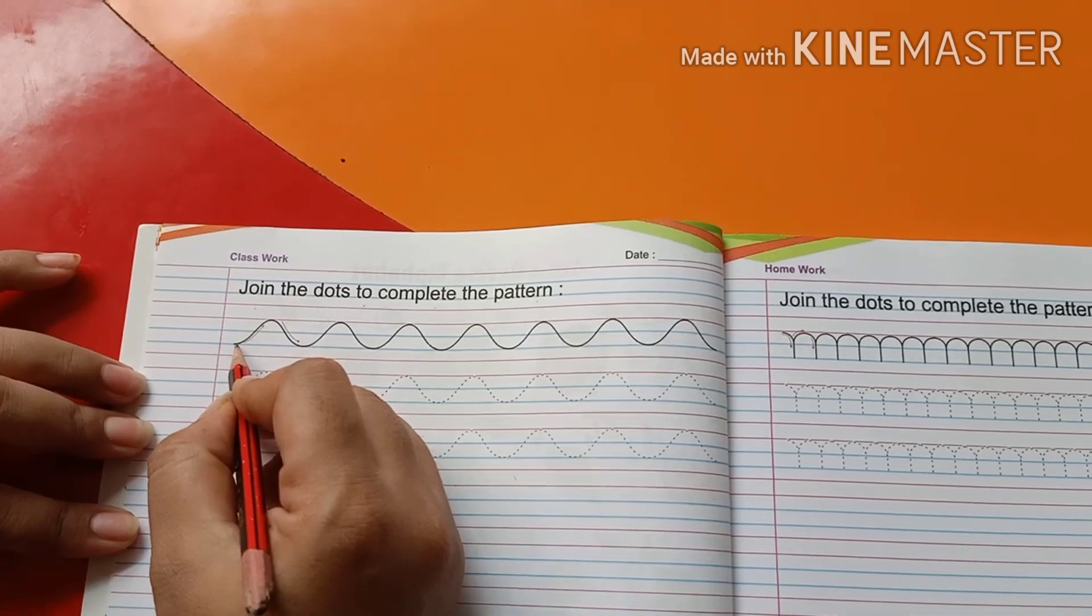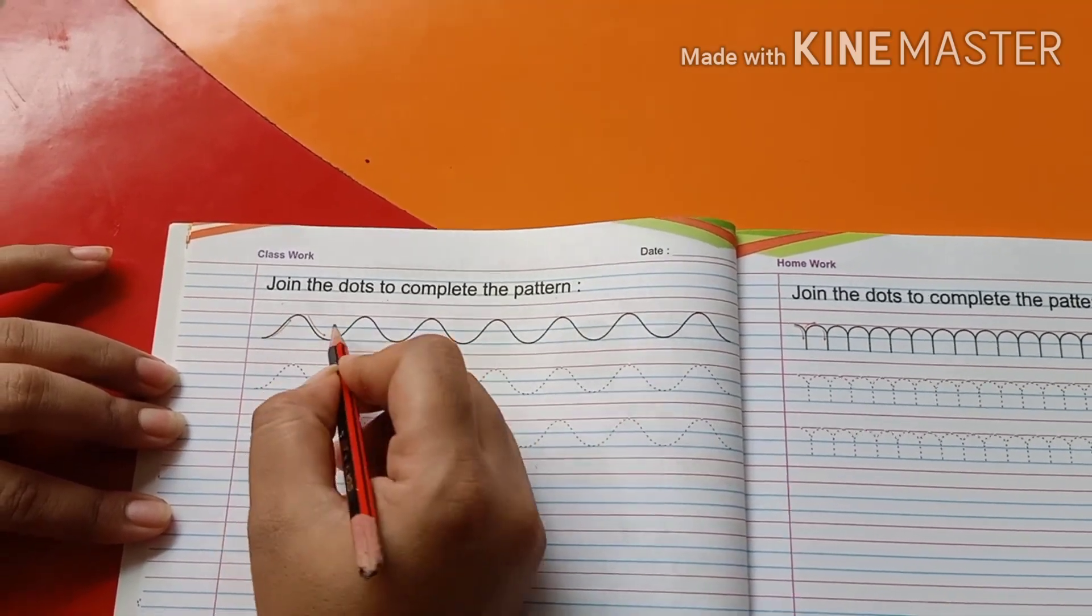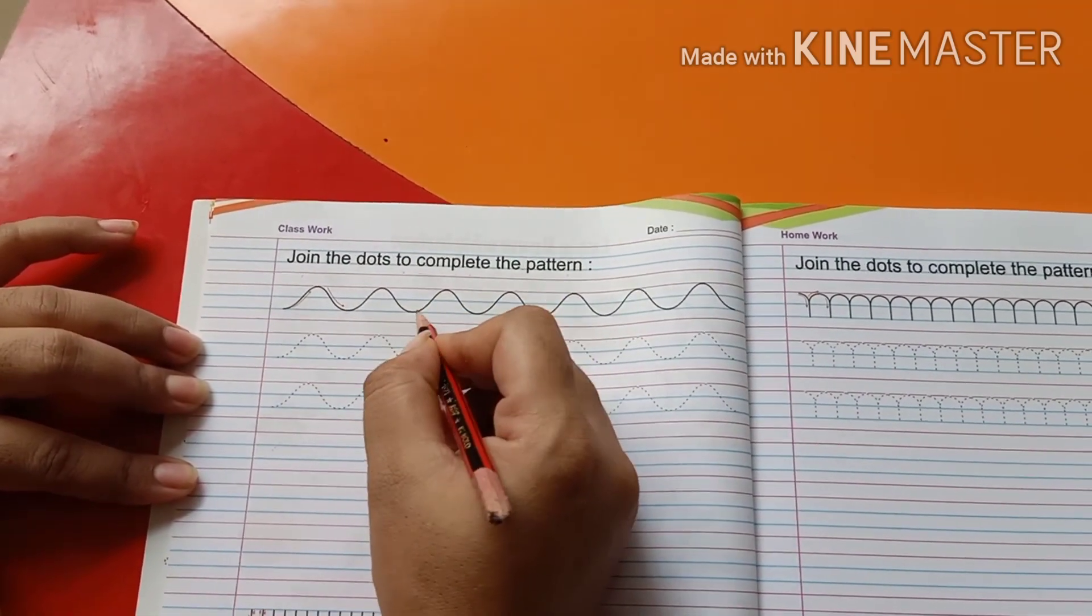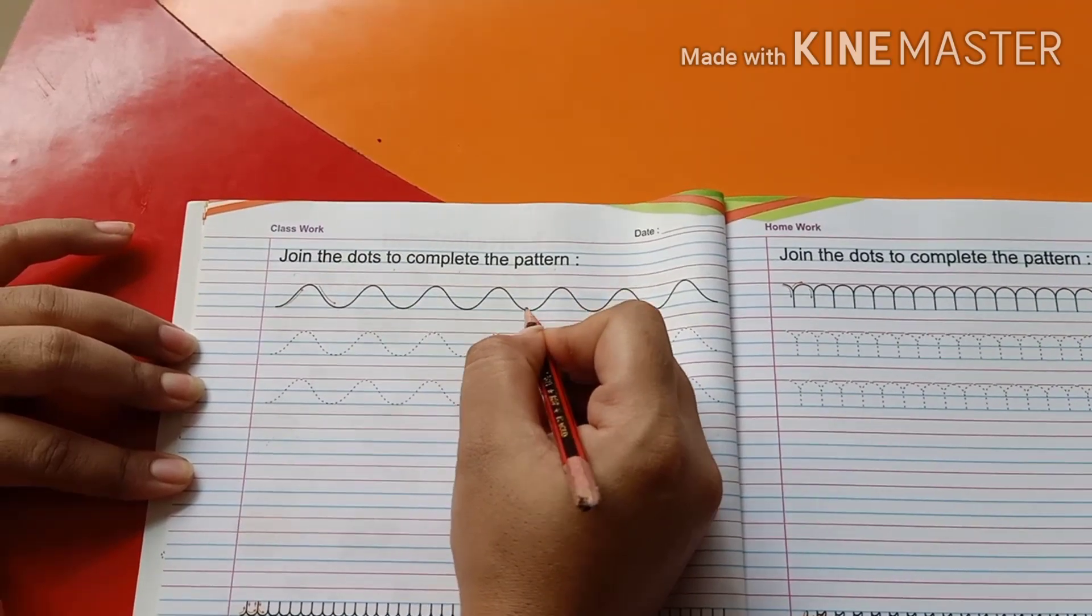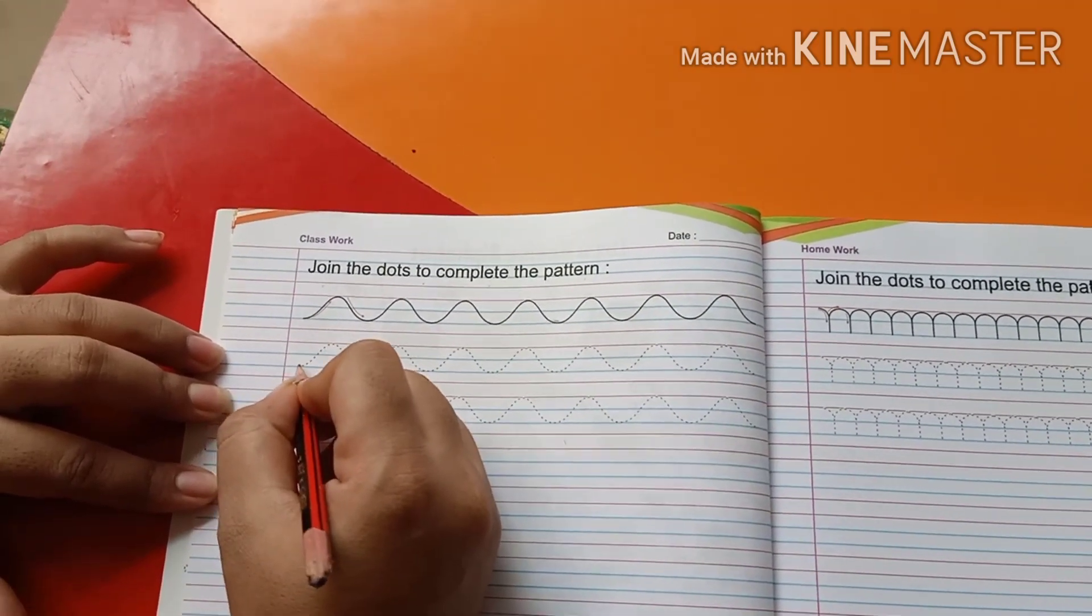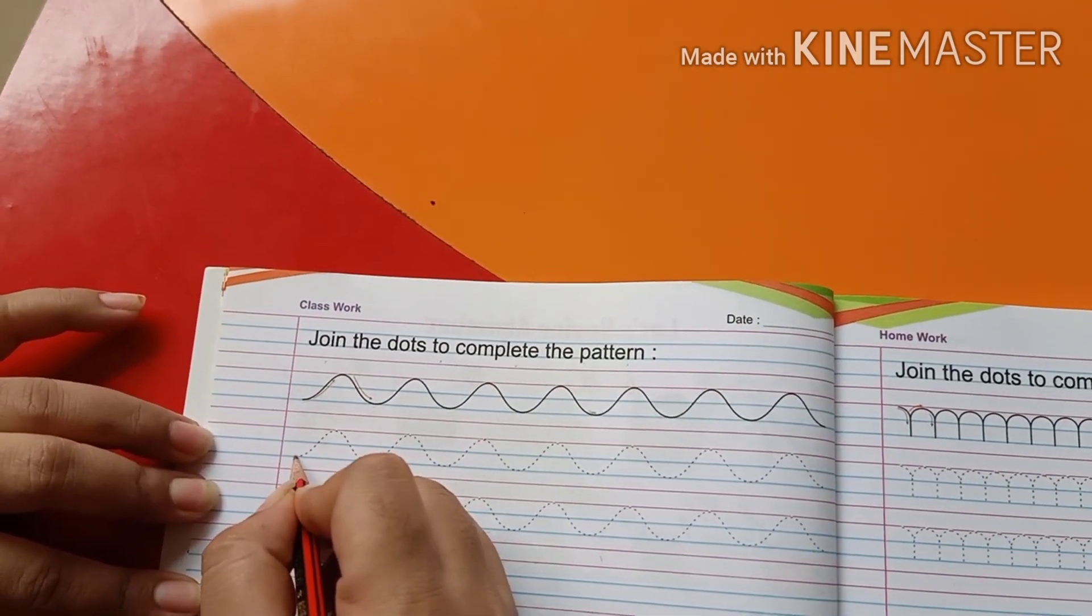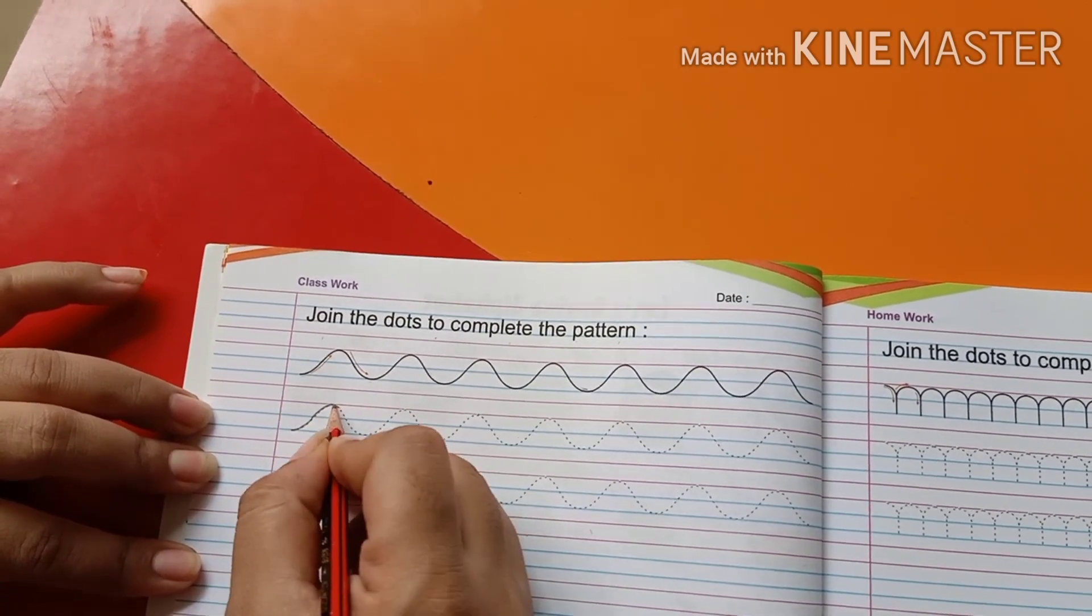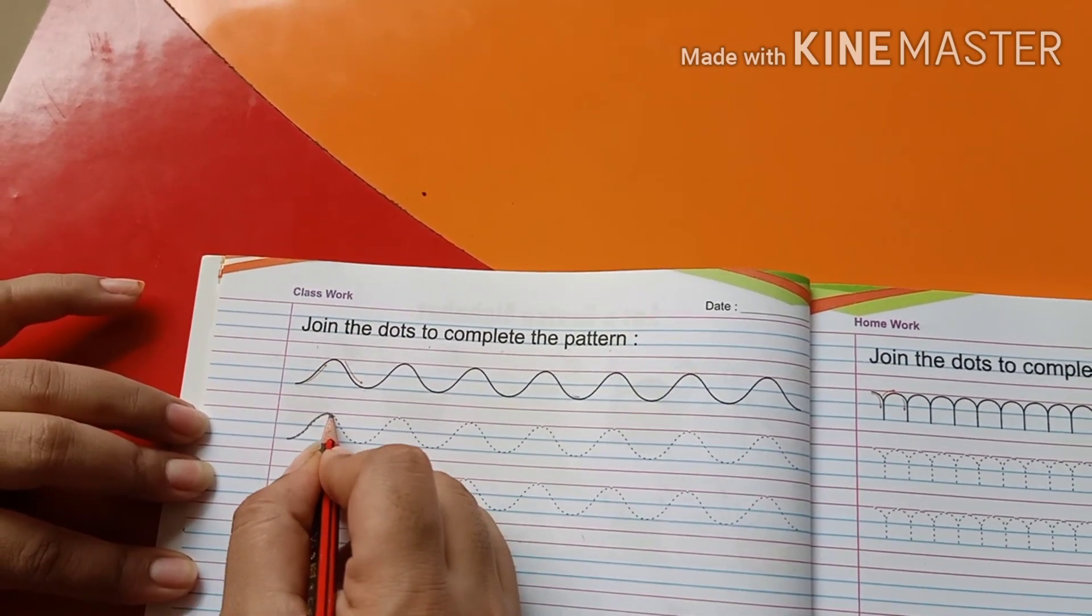You have to write curve, next curve, curve and curve. Now you have to dress like this. And kids write with me.